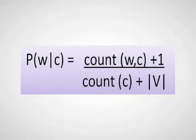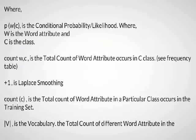Where P(W|C) is the conditional probability likelihood, where W is the word attribute and C is the class. Count(W,C) is the total count of word attribute occurs in C class from the frequency table. Plus one is Laplace smoothing. Count(C) is the total count of word attribute in a particular class in the training set. V is the vocabulary, the total count of different word attributes in the training set.